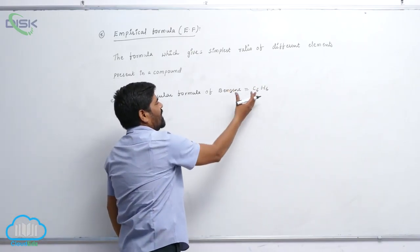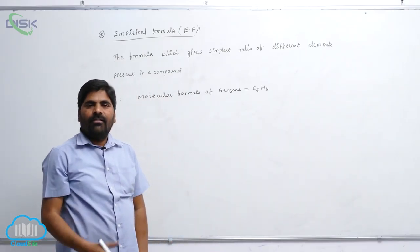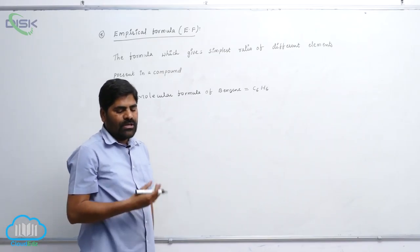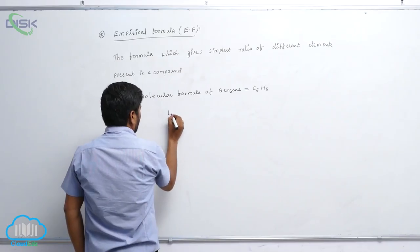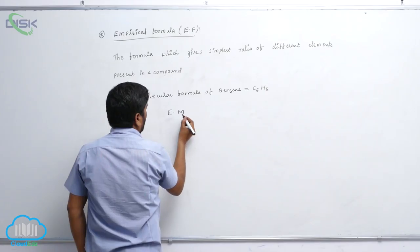So here, how many elements are present in benzene? Two elements. What are they? One is carbon, another one is hydrogen. So therefore its empirical formula is empirical formula, E.M., empirical formula.